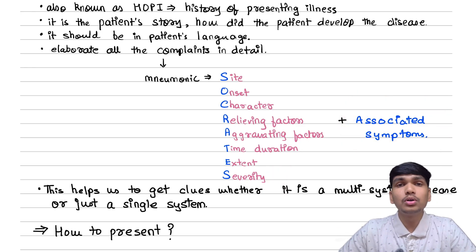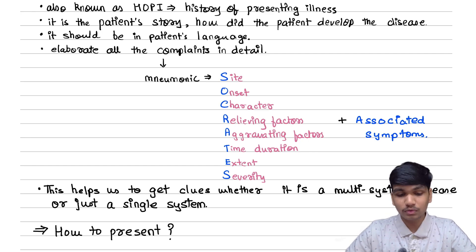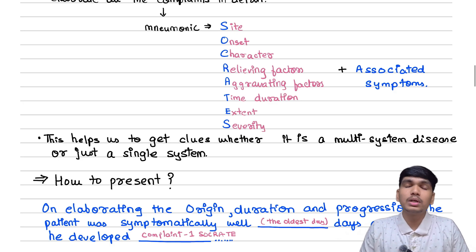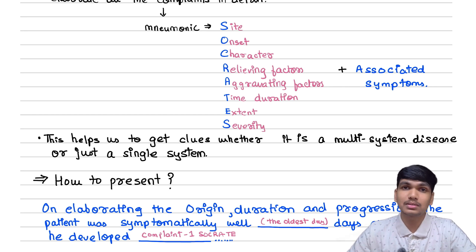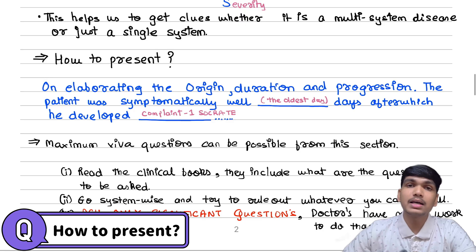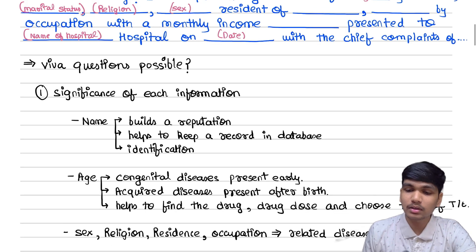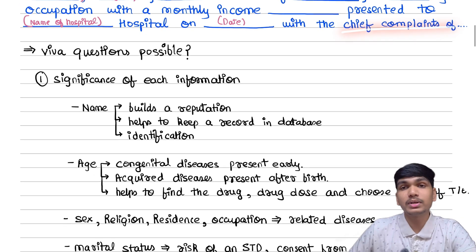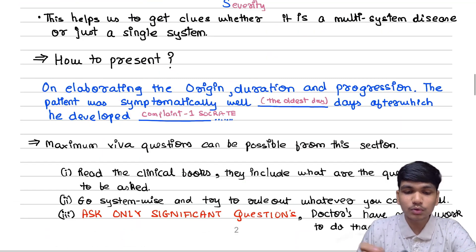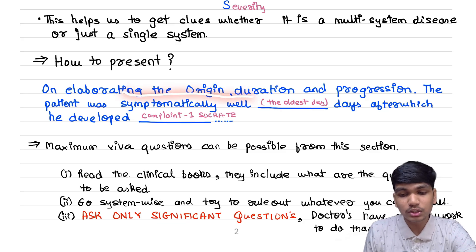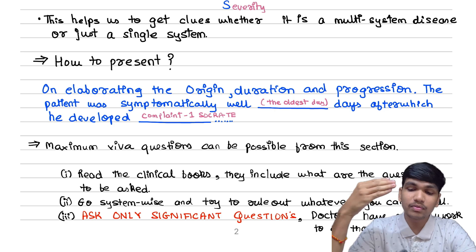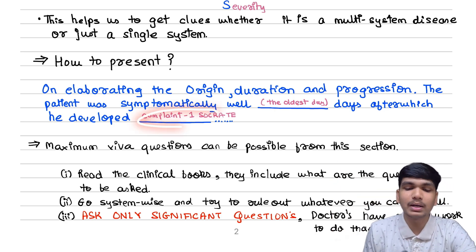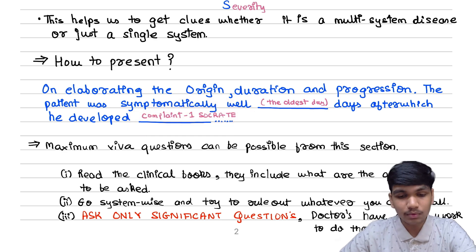For ODP, you should read the symptomatology given in clinical books very well. ODP will help us to determine whether it is a multisystemic disease or a single system disease. In terms of presentation, after mentioning the chief complaints, in elaborating the origin, duration, and progression, you will first write that the patient was symptomatically well, then mention the oldest complaint date, and then after how many days he developed the first complaint.